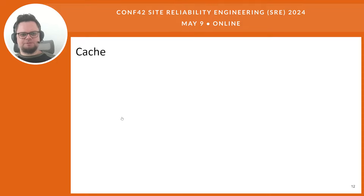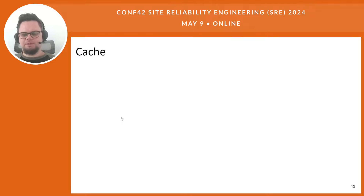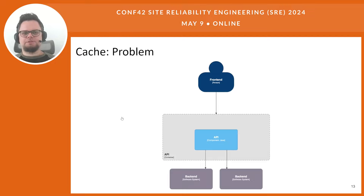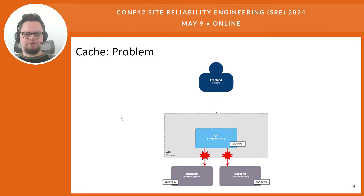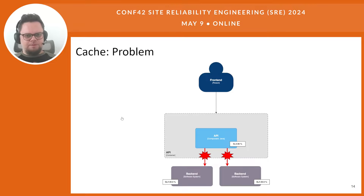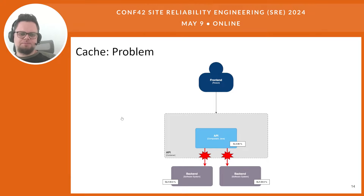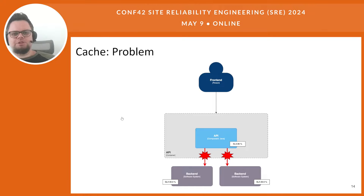Next pattern is cache. Caching is a vast topic in software engineering, so today we will focus only on application-level caching. Let's return to our example. We still have an application that communicates with several other applications. Let's assume we have sufficiently high SLA in our backends and they have very low probability of error. But when an operation requires querying all these backends, each can independently respond with an error. Due to errors happening independently, the resulting probability of error in our application will be higher than in each individual backend.